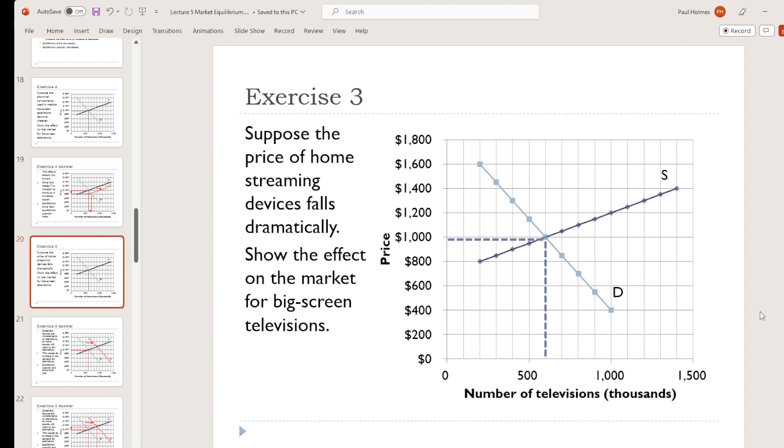So here I'm thinking things like Roku and Amazon Firesticks and maybe your Xbox or PlayStation that you might use to access apps on your television. So the price of these things falls a lot. What's that going to do in the market for big screen TVs?